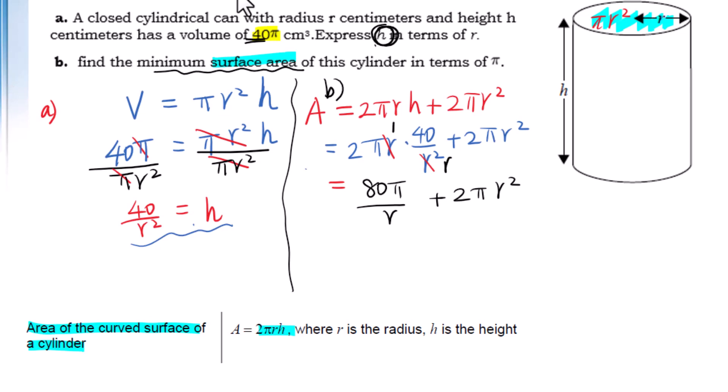Since we are looking for the minimum surface area, the independent variable is r in this formula. So we have a formula: A'(r) equals 80πr^(-1) prime plus 2πr² prime.